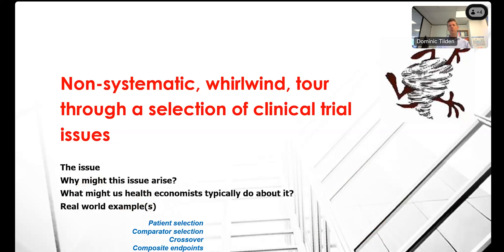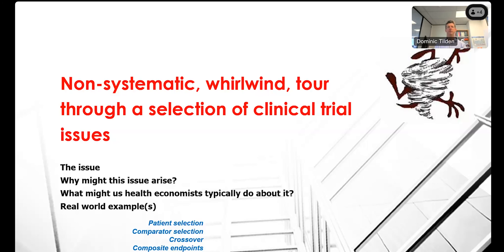This is a cross-section — not exhaustive — of topics I think are worthy of discussion. For each issue I want to describe the issue, understand why it arises, explain what health economists typically do to resolve it, and illustrate with case studies. The five main topics are: patient selection, comparative selection, crossover, composite endpoints, and surrogate endpoints.